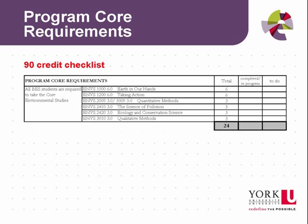This slide shows the program core requirements for the 90 credit checklist. Indicate in the proper column a 3 or 6 credit value for which courses you have completed or have in progress, and which courses you still have left to do.